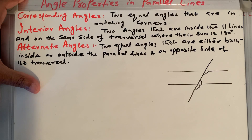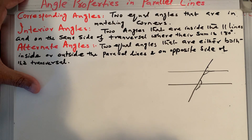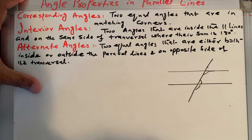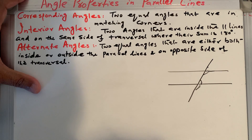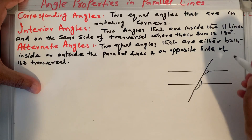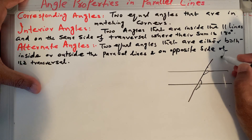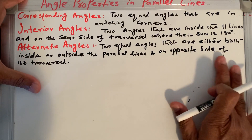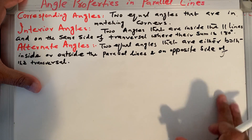Now inside the parallel lines we also have alternate angles. We will see some more examples to understand the definition thoroughly. Alternate angles are two angles that are either both inside or outside the parallel lines and on the opposite side of the transversal. Let's take another example to check it.